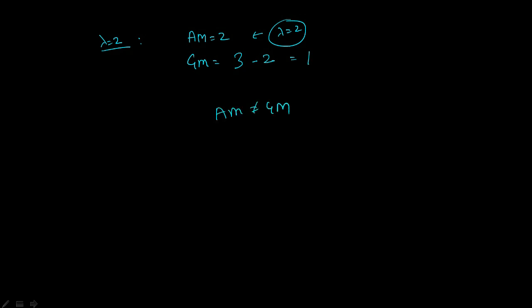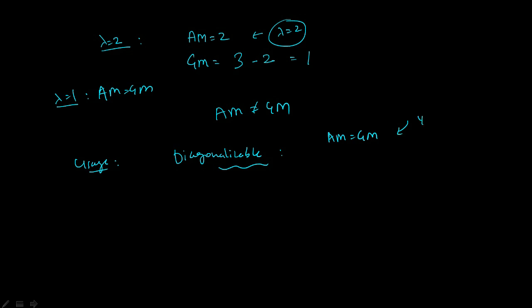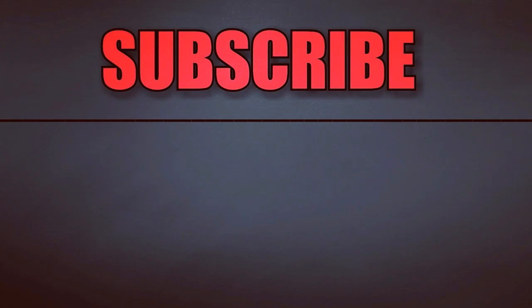This is important: for lambda equal to 1, AM was equal to GM, and both values were 1. The usage of AM and GM is in the diagonalizability concept. If AM equals GM for all eigenvalues, then the matrix can be diagonalized. If AM is not equal to GM, then it cannot be diagonalized. That is the basic concept.